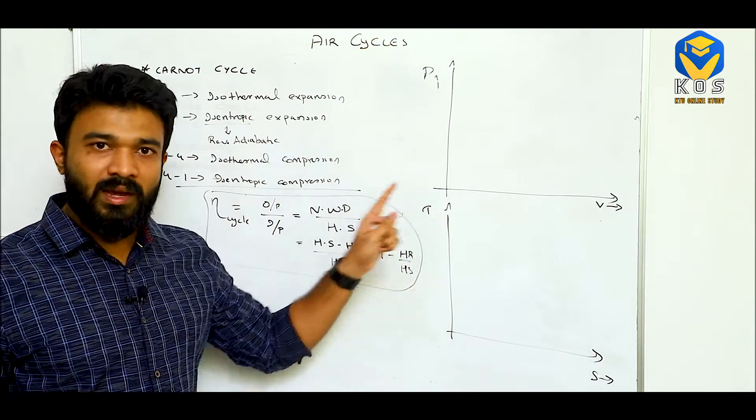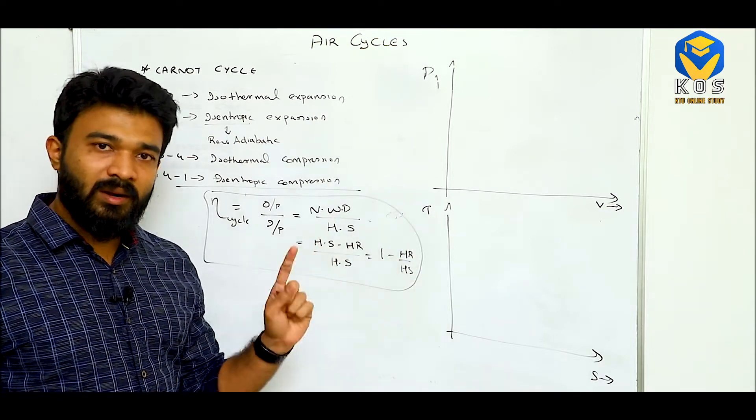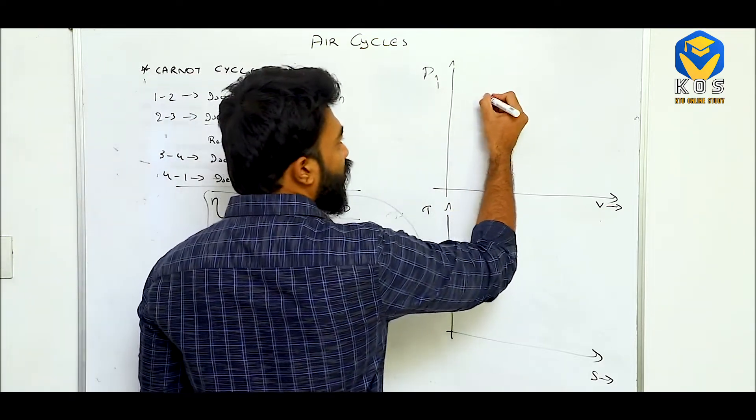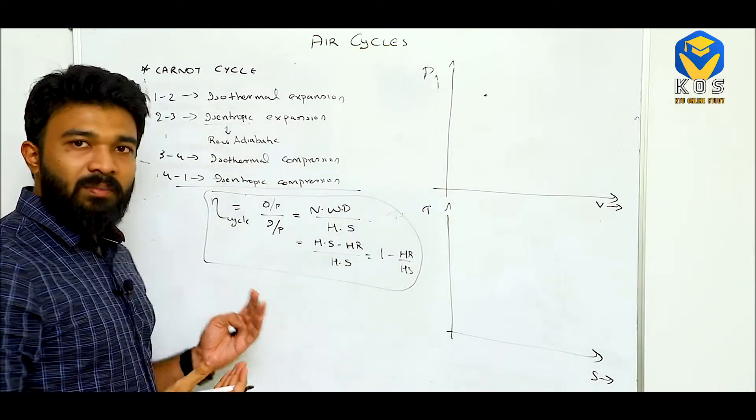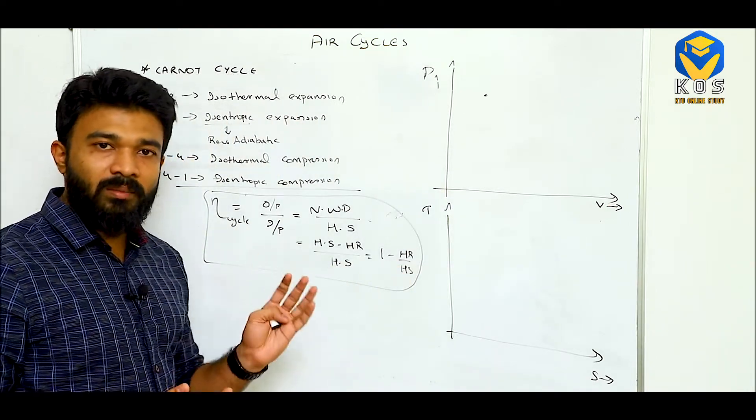If we turn into PVA and TS diagram, we represent the Tm. One to two process being an expansion process. The pressure will decrease and volume will increase.